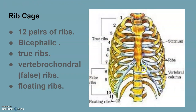In the rib cage, there are 12 pairs of ribs. Each rib is a thin flat bone connected dorsally to the vertebral column, and it has two surfaces on the dorsal end — hence it is called bicephalic. The first seven pairs of ribs are called true ribs because they are attached to the thoracic vertebrae and are connected to the sternum via hyaline cartilage.